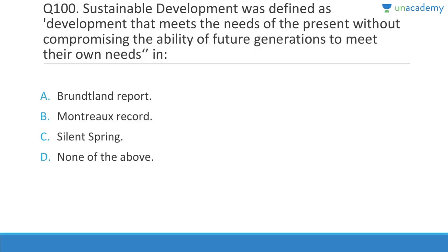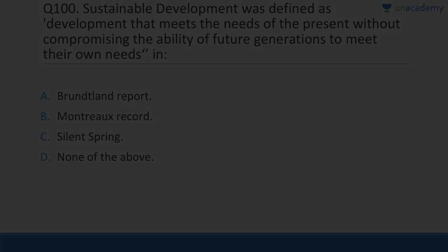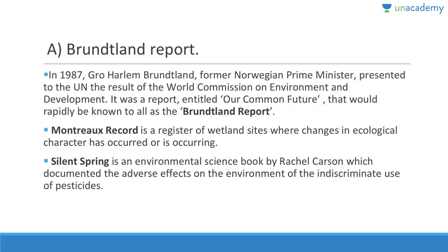Question 100: Sustainable development was defined as development that meets the needs of the present without compromising the ability of future generations to meet their own needs — this was in the Brundtland Report in 1987, developed by former Norwegian Prime Minister Gro Harlem Brundtland, titled 'Our Common Future,' a result of the World Commission on Environment and Development. The Montreux Record is a register of wetland sites where changes in ecological character have occurred. Silent Spring is an environmental book by Rachel Carson.